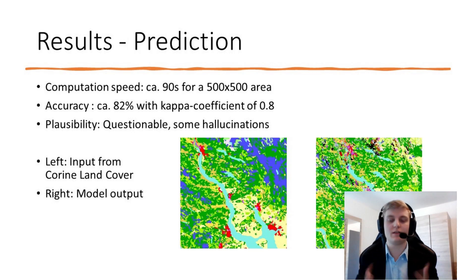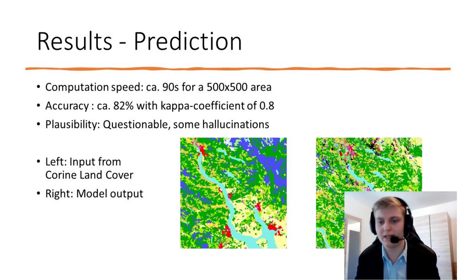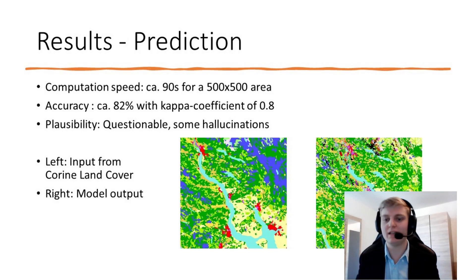On the left image, we see the original input, which is a river near Oslo. On the right side, we see what our model thinks it looks like in the future. As you can see, it's a little unusual in some parts — the cities, the general river, and the nature parts are mostly conserved. However, a bunch of dark purple and bright pink spots appear, representing mining areas and salt marshes, which you typically wouldn't expect in this area. This means plausibility is decent but a little questionable, with some hallucinations.